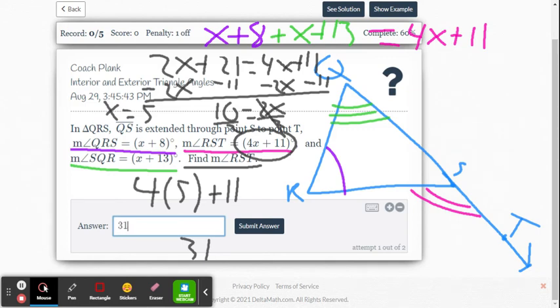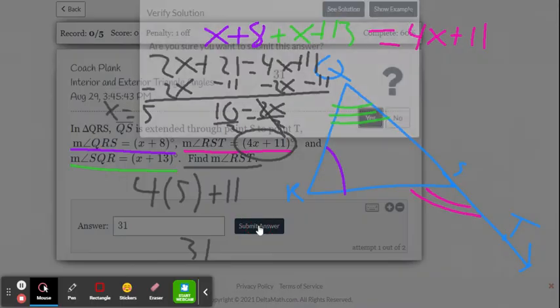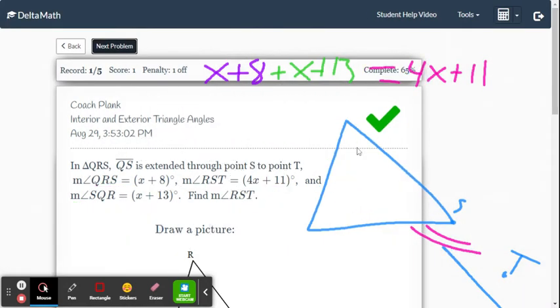Now we just type that in. 31 is all we put. You know how to write the measure angle RST or anything. Just put 31. Submit it. And we got it right. So the common mistake we're going to see from students in the beginning is you're going to want to type in just the x value. You've got to read what is it asking you for.